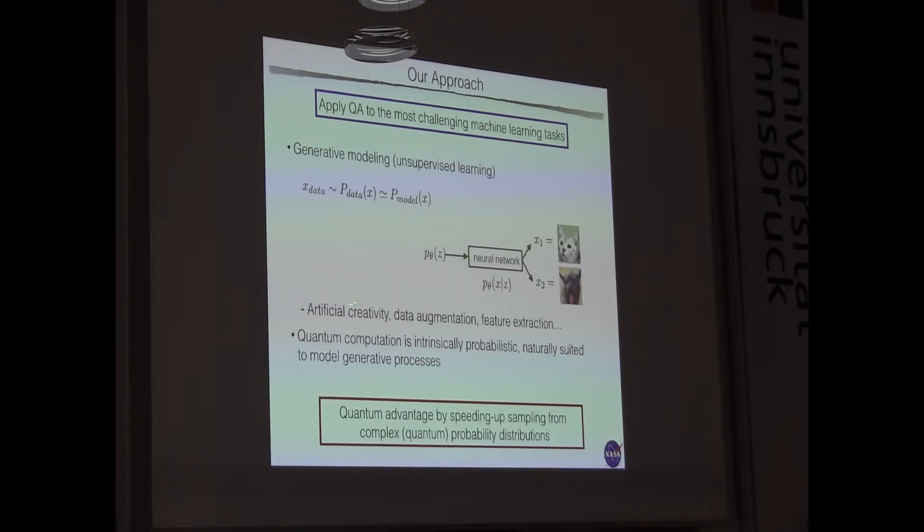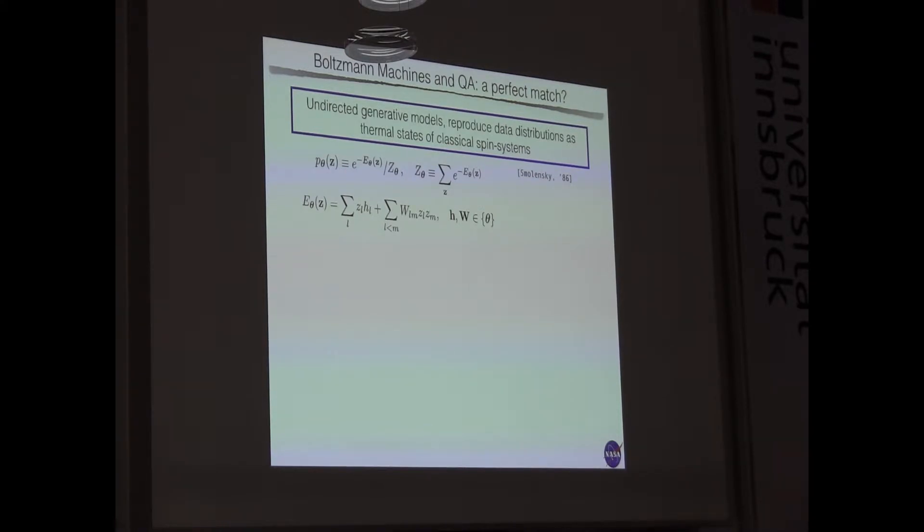And maybe you heard about deep fakes, but we try to do that for better tasks. It can be used for feature extractions, too, if you want to do classification. Also, quantum computation is intrinsically probabilistic. So the goal really is to use quantum devices to sample from complex quantum distribution for sampling for probabilistic tasks. So one generative model that is well-known is Boltzmann machines. Boltzmann machines seems a perfect match to quantum annealers. These are undirected generative models that are basically spin systems.